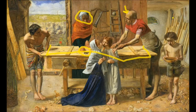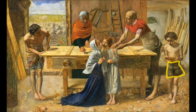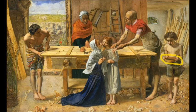Then we have this boy over here — this is John the Baptist. You can see that he's carrying a bowl of water and wearing his fur pelt in the traditional manner in which he was represented in Renaissance art. He has a very important symbolic role: he's carrying this bowl of water to Jesus, which symbolizes his eventual baptizing of Jesus in the Jordan River.